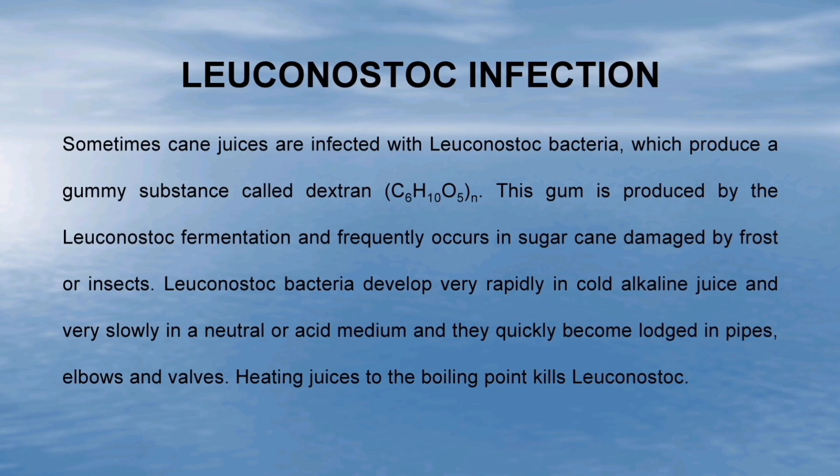In this slide, I will discuss the leuconostoc infection in sugarcane juice. Sometimes cane juices are infected with leuconostoc bacteria, which produce a gummy substance called dextrin. This gum is produced by leuconostoc fermentation and frequently occurs in sugarcane damaged by frost or insects. Leuconostoc bacteria develop very rapidly in cold alkaline juice and very slowly in a neutral or acid medium, and they quickly become lodged in pipes, elbows and valves. Heating juices to the boiling point kills leuconostoc.